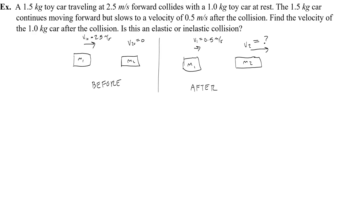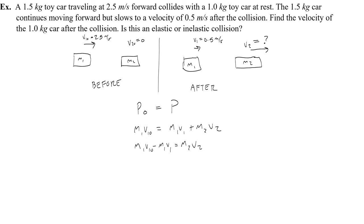After the collision, the first object is still moving forward — it's just slowed down — so that 0.5 m/s velocity is also positive, and we want to find v2. Starting with momentum conservation: p₀ equals p_f. In the beginning there is only momentum from the first object: m₁v₁₀. At the end there are two momenta, one for each object. Finding v2 means subtracting m₁v₁ from both sides, giving m₁v₁₀ minus m₁v₁, then dividing both sides by m₂ so they cancel out.